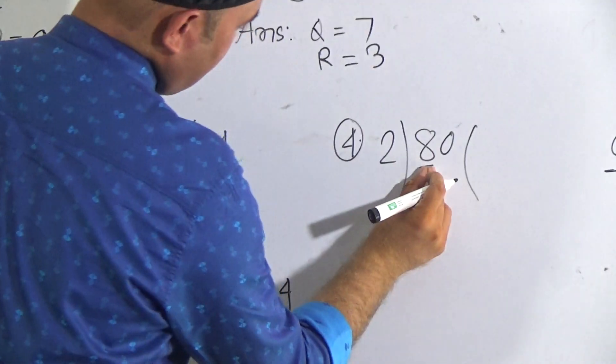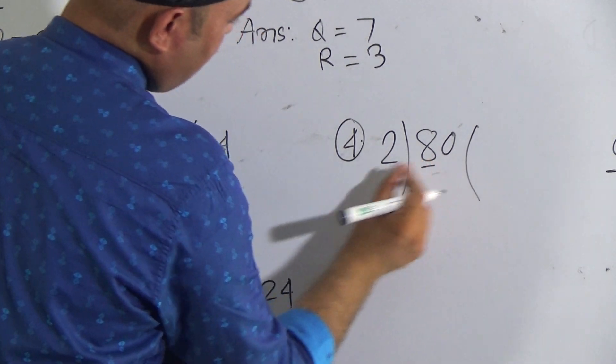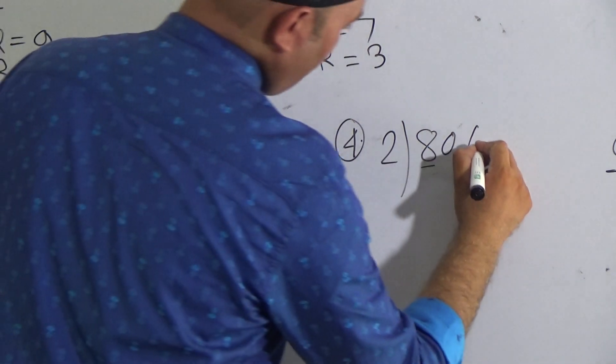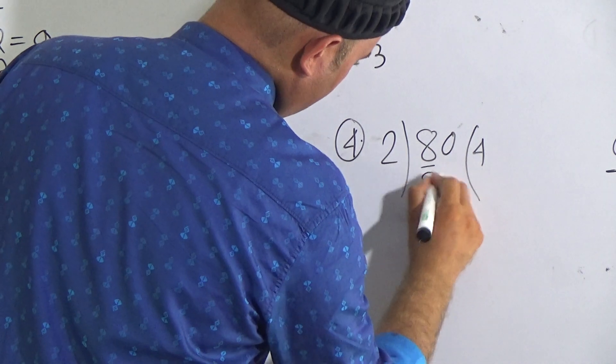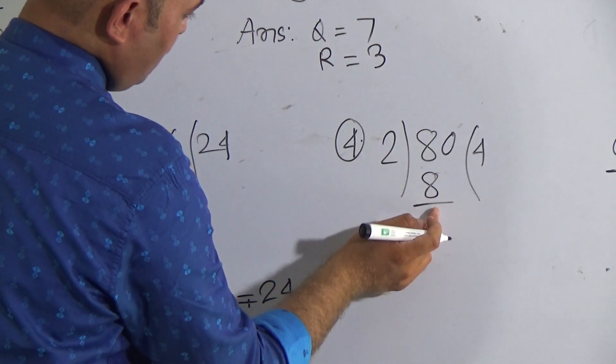Again look here, here is 8 is first digit and 2, so you have to divide 8 by 2. Then you have to remember the times table of 2 and we know that 4 twos are 8. Now subtract 8 from 8, it will be 0. No need to write 0 here.